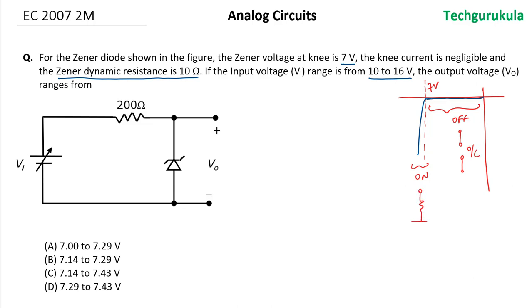it with series resistance and a voltage source representing the breakdown voltage. Here it is 7 volts, and this resistance is given as 10 ohms.